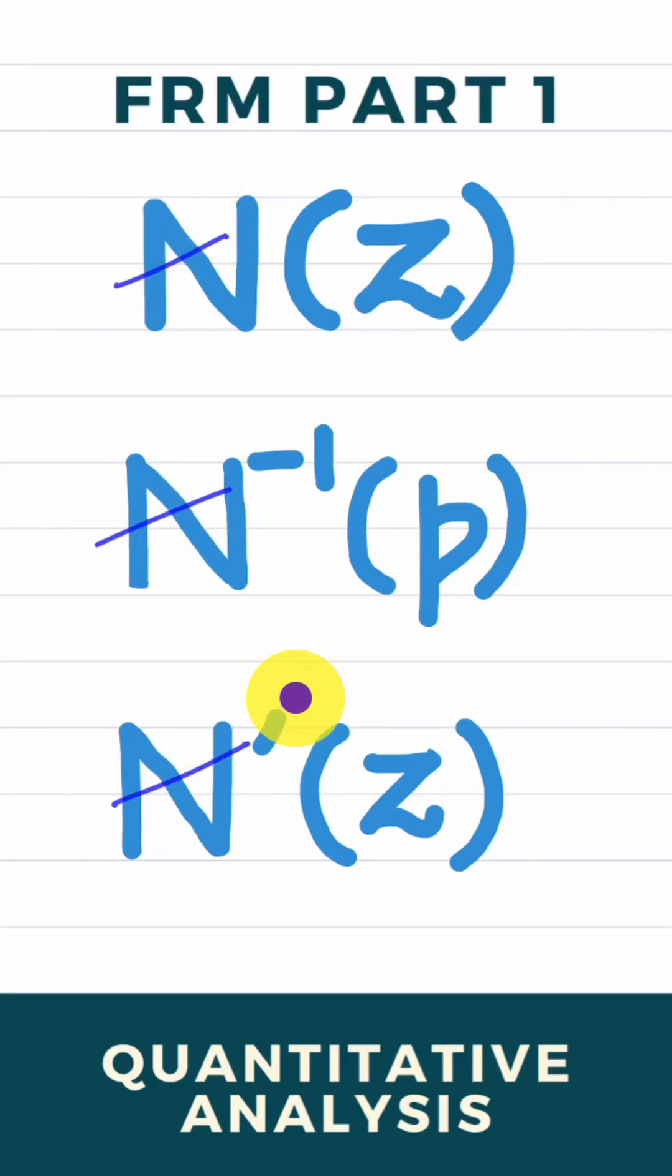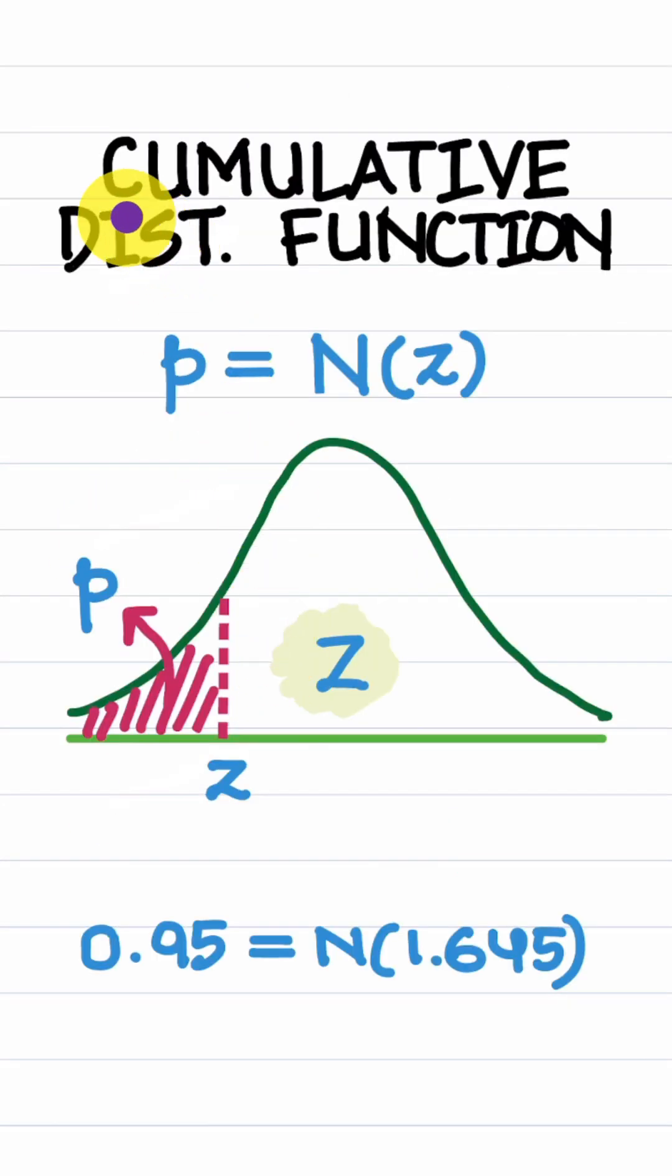Three key functions in the standard normal distribution. First, the CDF, which returns the probability that Z will be below a certain level. Think of it as the area under the curve to the left of a specified value. For example, the probability that Z will be below this level turns out to be 95%.